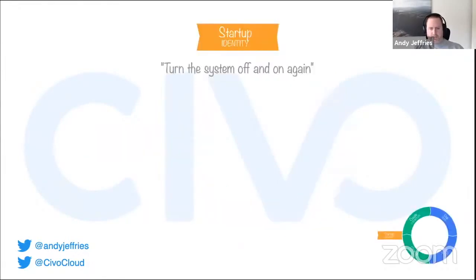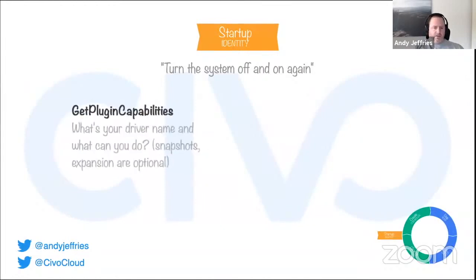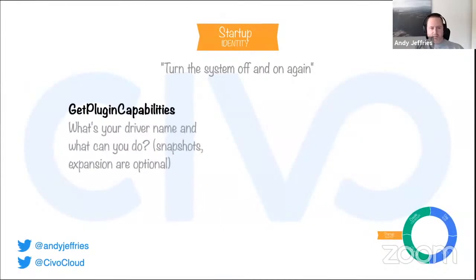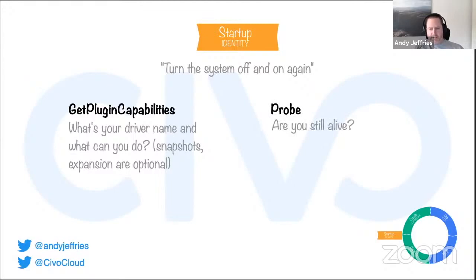Looking at each of these parts: the first stage is startup, equivalent to the boot cycle. The two methods you need to implement are get plugin capabilities — where you tell Kubernetes the driver's name and what optional features you support — and probe, which is called often by Kubernetes and is the easiest method. You just return a response, and Kubernetes knows your controller is still alive.